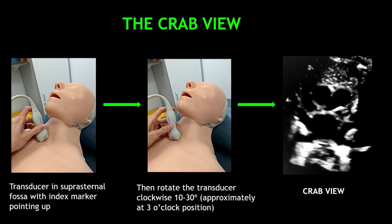It's very simple. First place the transducer in the suprasternal fossa with the index marker pointing up. Then rotate the transducer clockwise approximately 10 to 30 degrees at the 3 o'clock position. With these two simple steps you're going to be able to get the CRAB view.